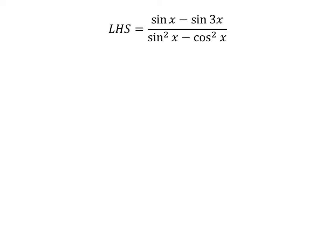The left hand side of the equation to be proved is sine of x minus sine of 3 times x upon square of sine of x minus square of cosine of x.